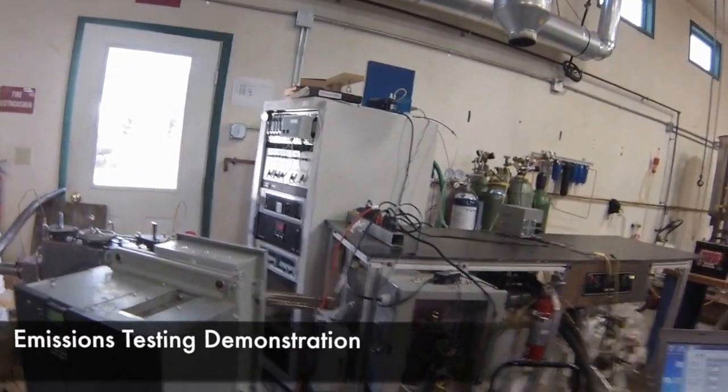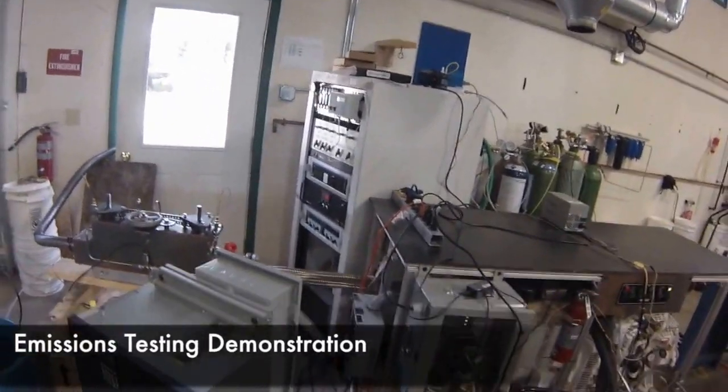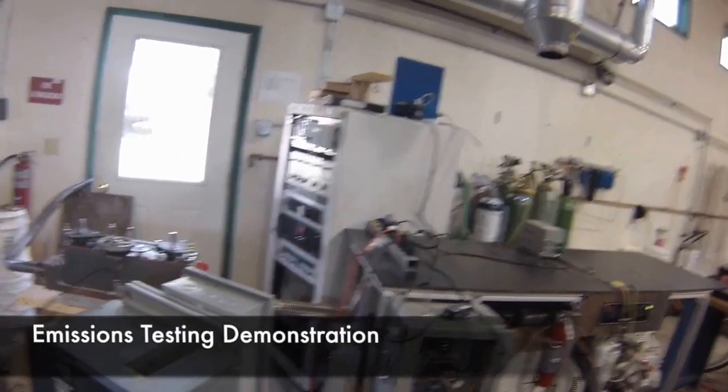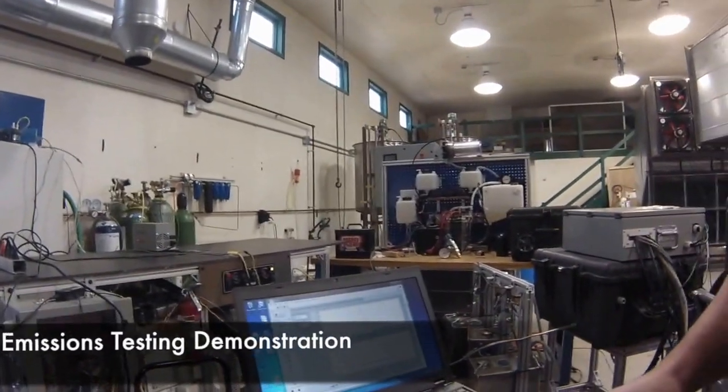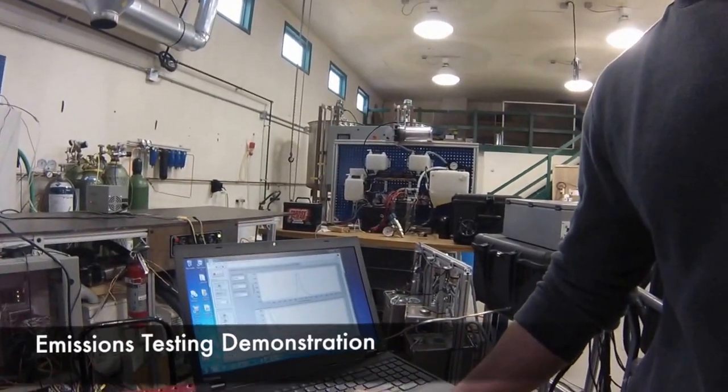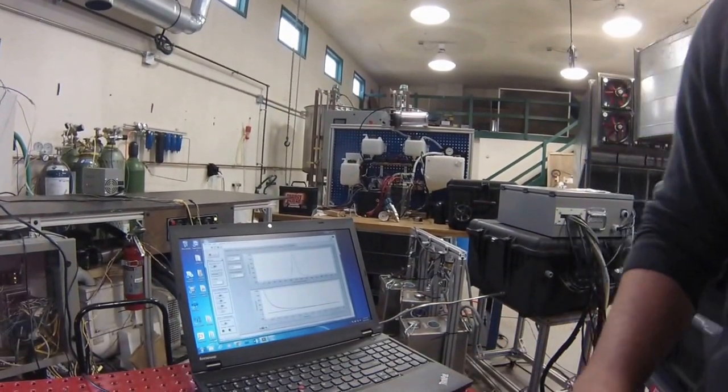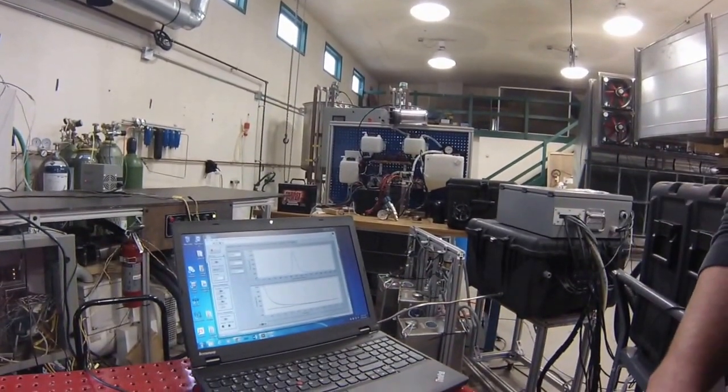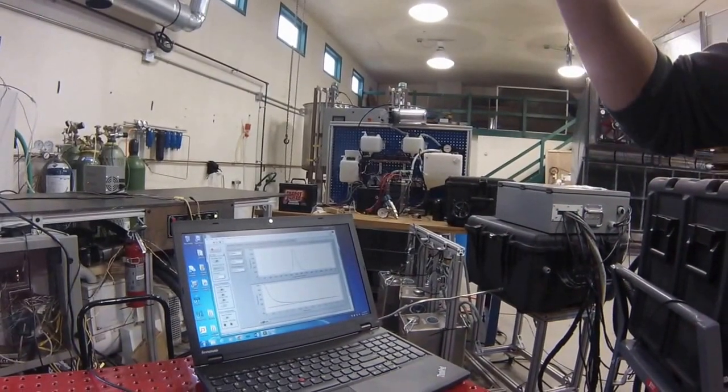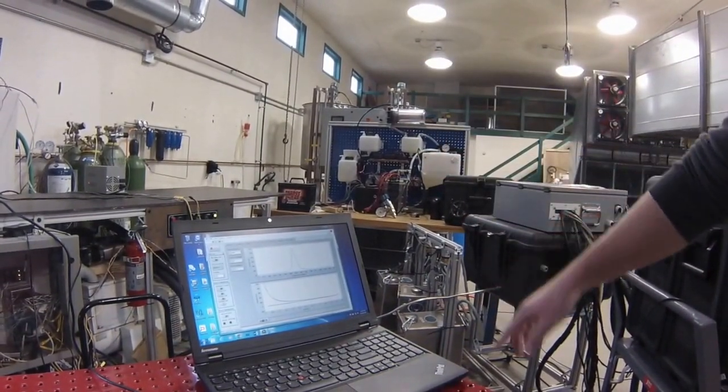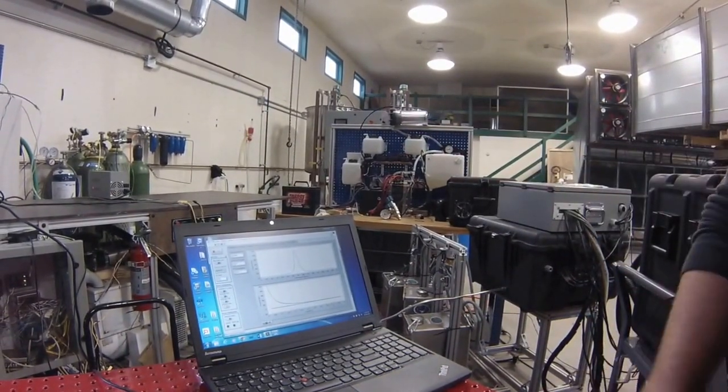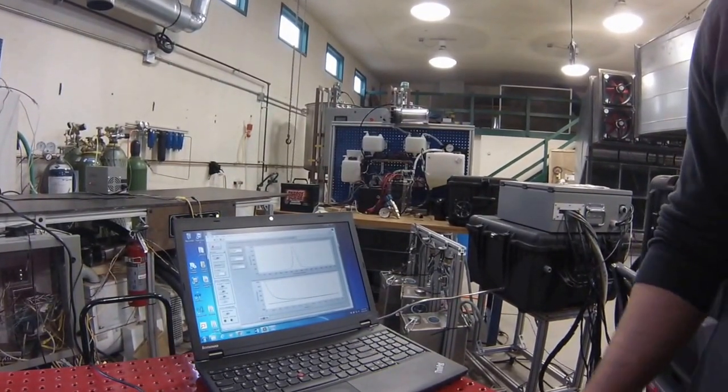If we want to end up running a completely automated test based on the EPA test cycle, just hit that button and it'll run through. It takes about 45 minutes and it cycles through all the loads that you have to go through and logs all the data, so we can basically just sit back and watch it do its thing.